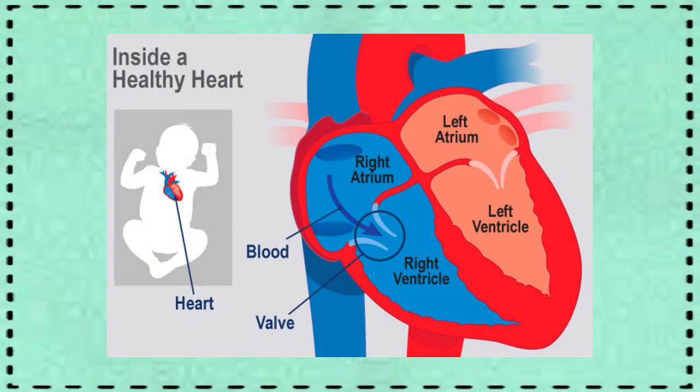Internally, the heart is divided into left and right compartments by a vertical partition. Each of those compartments is again divided into two chambers, so in all, the heart consists of four chambers. The upper chambers are called atria and the lower chambers are called ventricles. As you can see in the diagram, we have the left atrium, right atrium, left ventricle, and right ventricle.